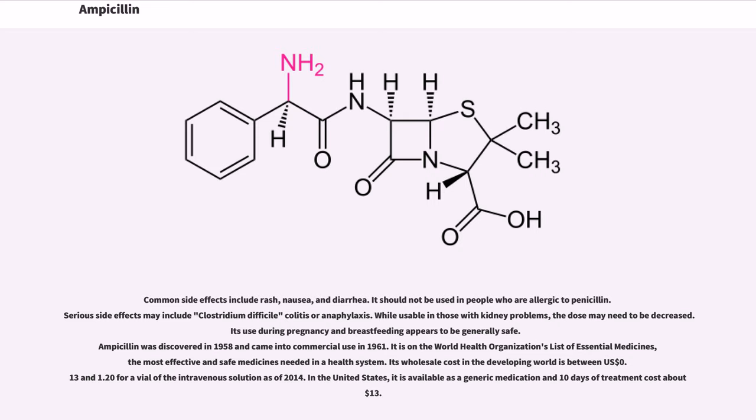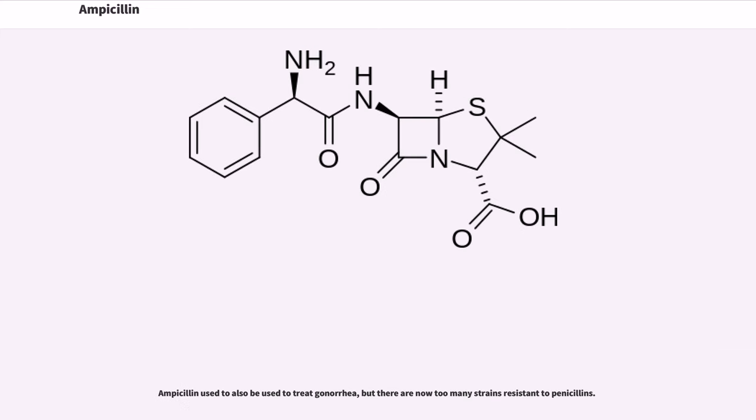Its wholesale cost in the developing world is between 13 US cents and 1.20 for a vial of the intravenous solution as of 2014. In the United States, it is available as a generic medication and 10 days of treatment cost about $1.13. Ampicillin used to also be used to treat gonorrhea, but there are now too many strains resistant to penicillins.